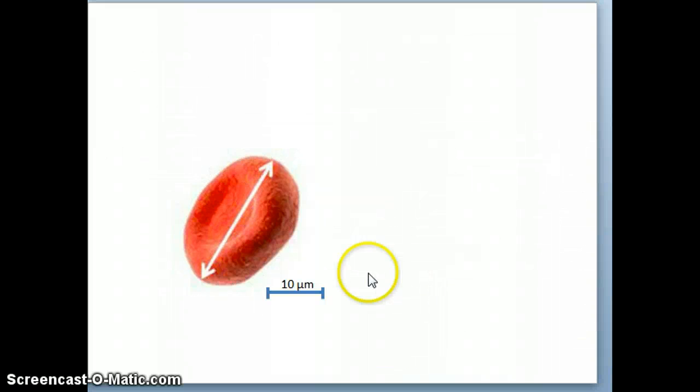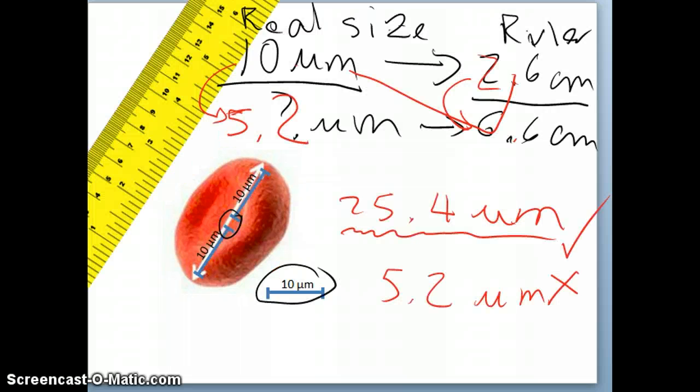Last thing that they could ask is, let's say they didn't give you this. But, they give you that this red blood cell is 50 micrometer in length. And, they ask you, what should be on this scale bar? Ooh, that's difficult. But, it's actually very similar to the first problem. Right here. So, why don't you guys try it out?